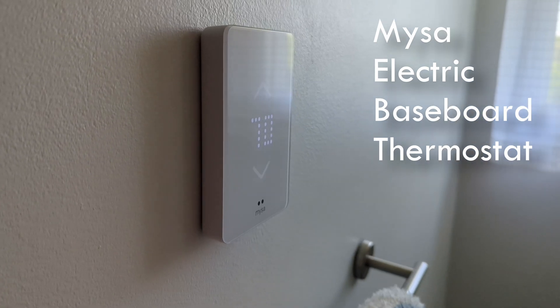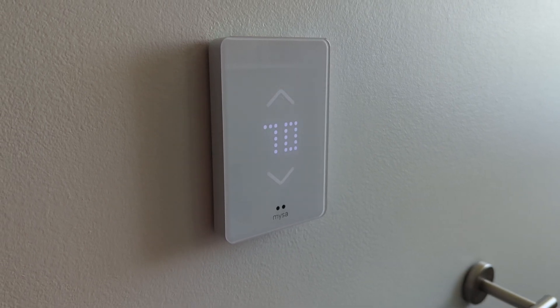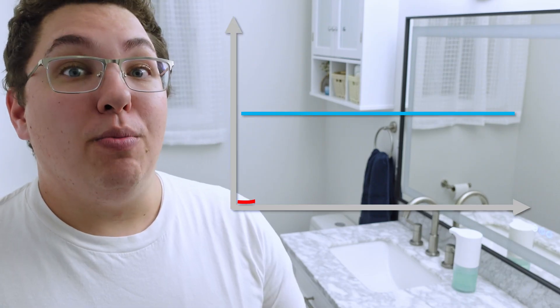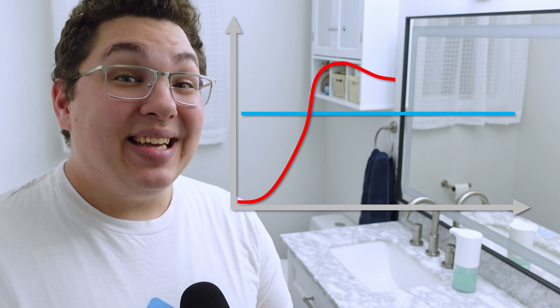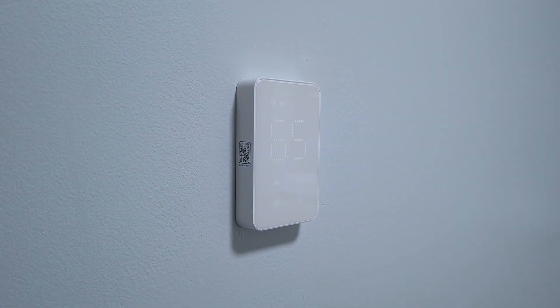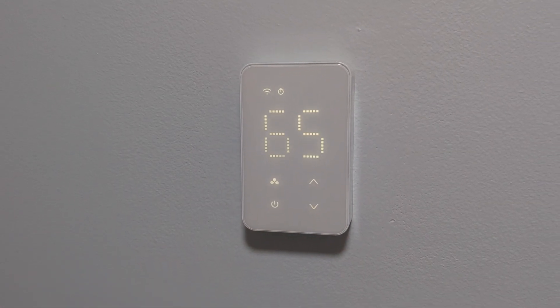My bathroom has an electric baseboard, and to control it I'm using a MISA electric baseboard thermostat, which measures both temperature and humidity. Not only can I control the temperature in Home Assistant, but I can also use the humidity sensor to trigger an automation — when someone starts taking a shower and humidity rises above a set point, the fan comes on and stays on until humidity drops back below that set point. It's nice having a temperature and humidity sensor built into the room that doesn't require batteries. In my other bathroom and office I use the MIROS electric baseboard thermostat, which I personally like better for the UI and Home Assistant integration, but I think the MISA looks pretty good.